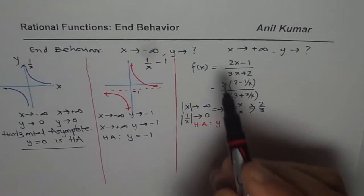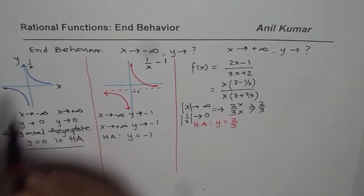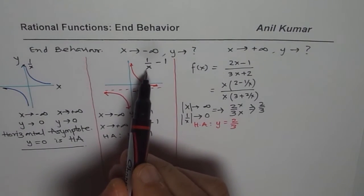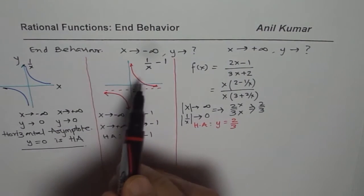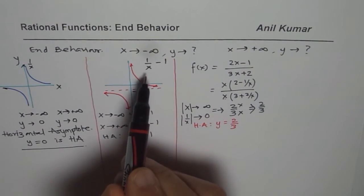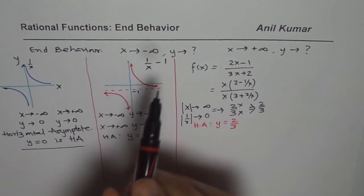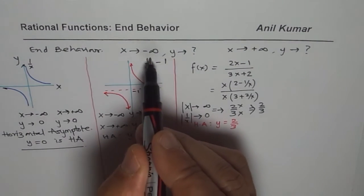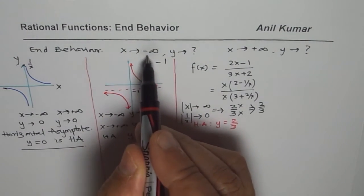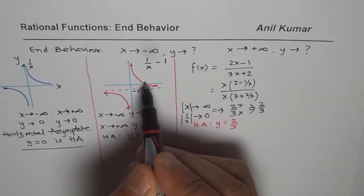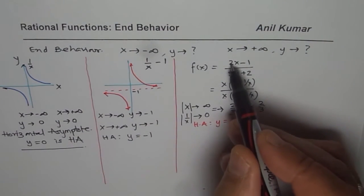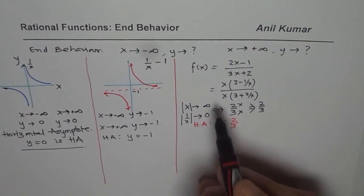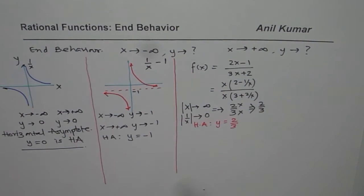What we notice from this example is that when the degrees of numerator and denominator are equal, the horizontal asymptote is the ratio of the leading coefficients. In the case of 1/x, the denominator degree was higher, giving asymptote y = 0. When we had a vertical translation by minus 1, that was a transformation. Here, it is the ratio of leading coefficients that gives us the asymptote.